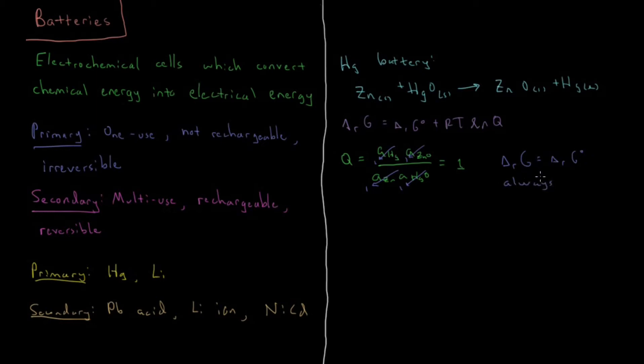Which means that the Gibbs energy is going to be equal to the standard Gibbs energy at all times during the battery's operation. Similarly, your E-cell is going to be equal to your E-naught cell at all times as well, and for this reaction that is going to be a constant output voltage of 1.35 volts. During the entire life cycle of its operation, because all of these chemical species are in condensed phase, their activities are all one, and they always operate at the standard EMF, which is 1.35 volts.